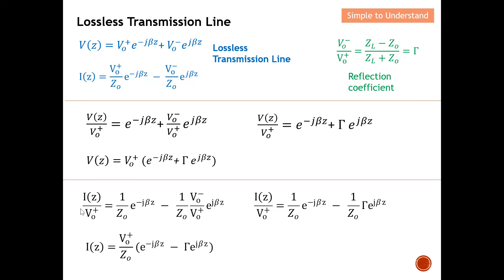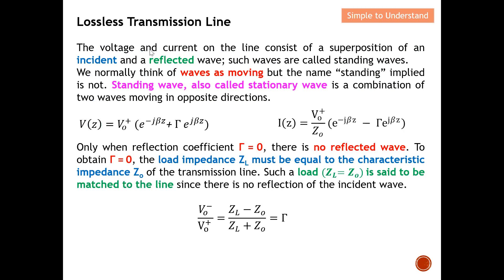I do exactly the same with the current equation. Dividing by V₀⁺ — V₀⁺ over V₀⁺ becomes one. The term V₀⁻ over V₀⁺ can be replaced by the reflection coefficient Γ. Rearranging and multiplying V₀⁺ back to the right-hand side, I finally arrive at the current equation. I'm going to use these two equations to explain return loss.